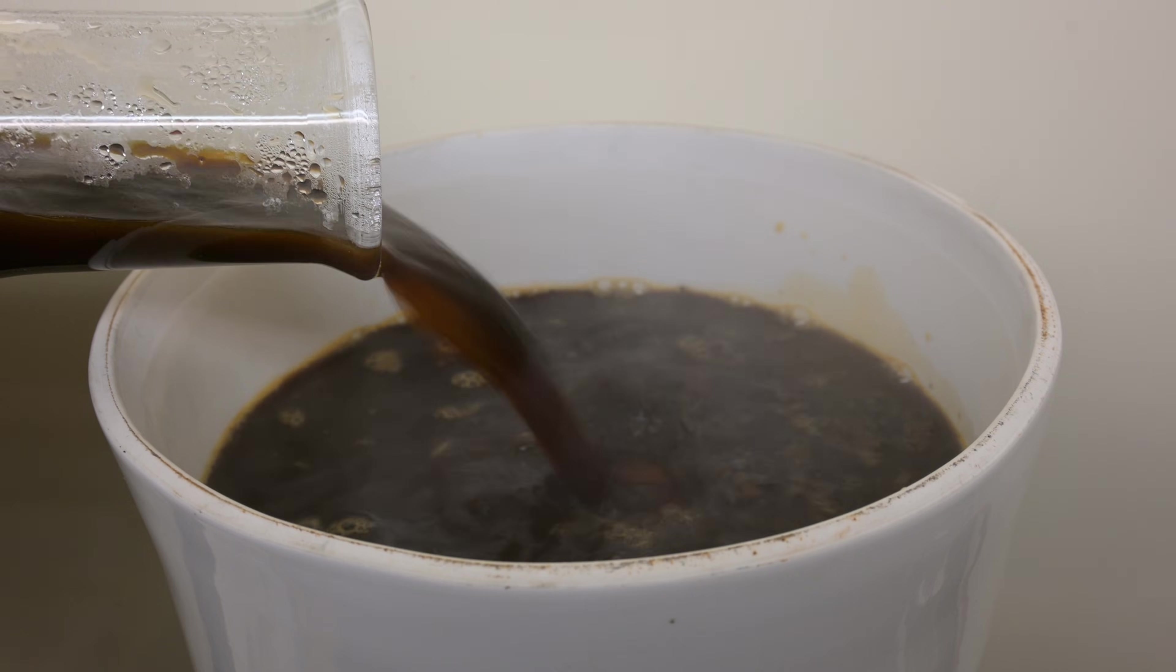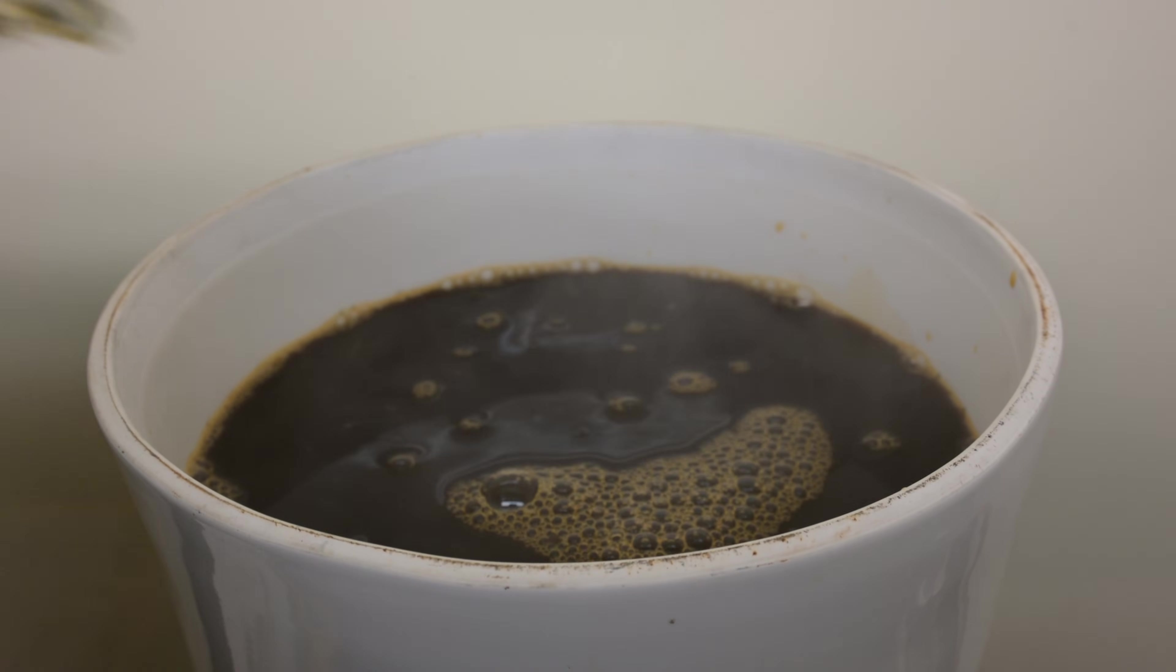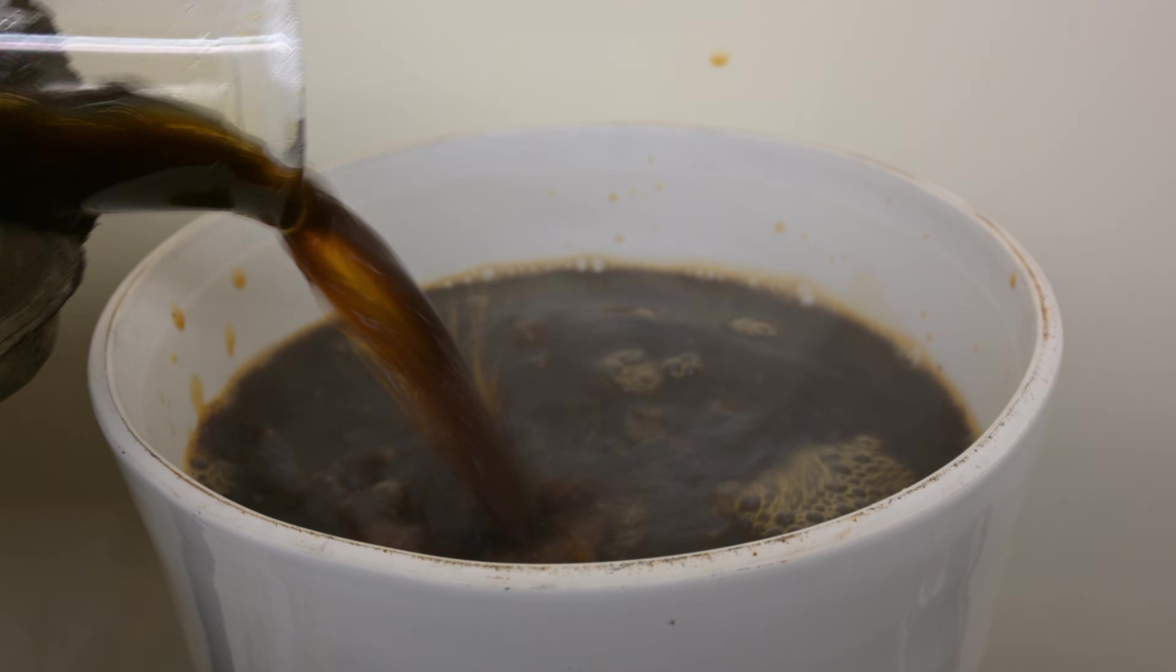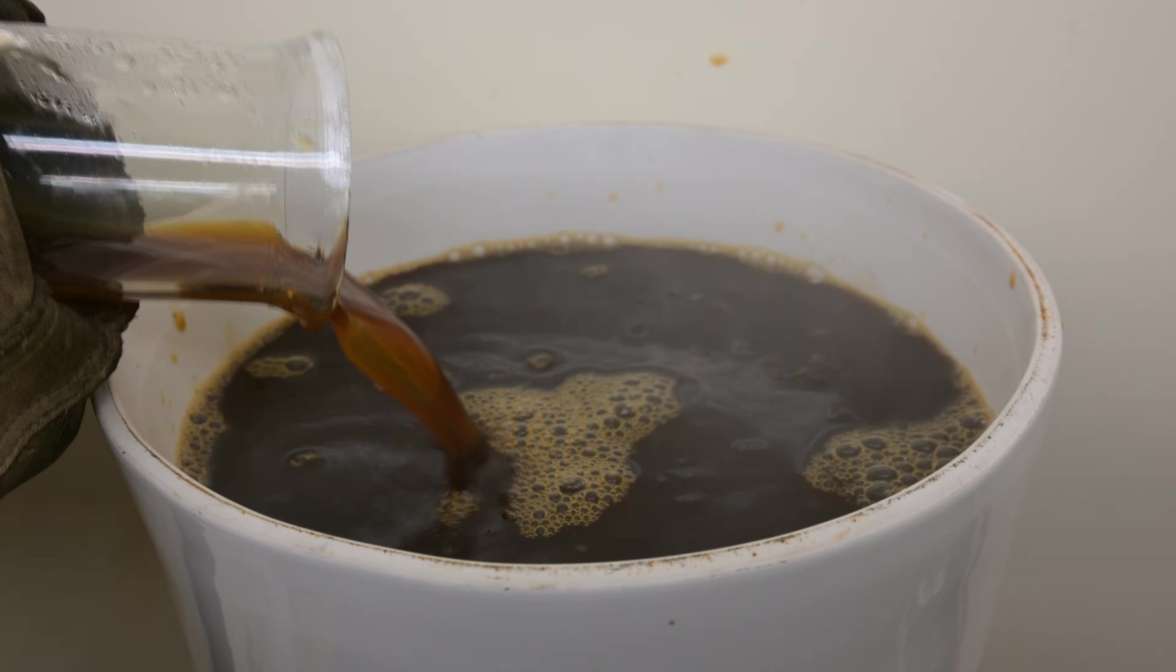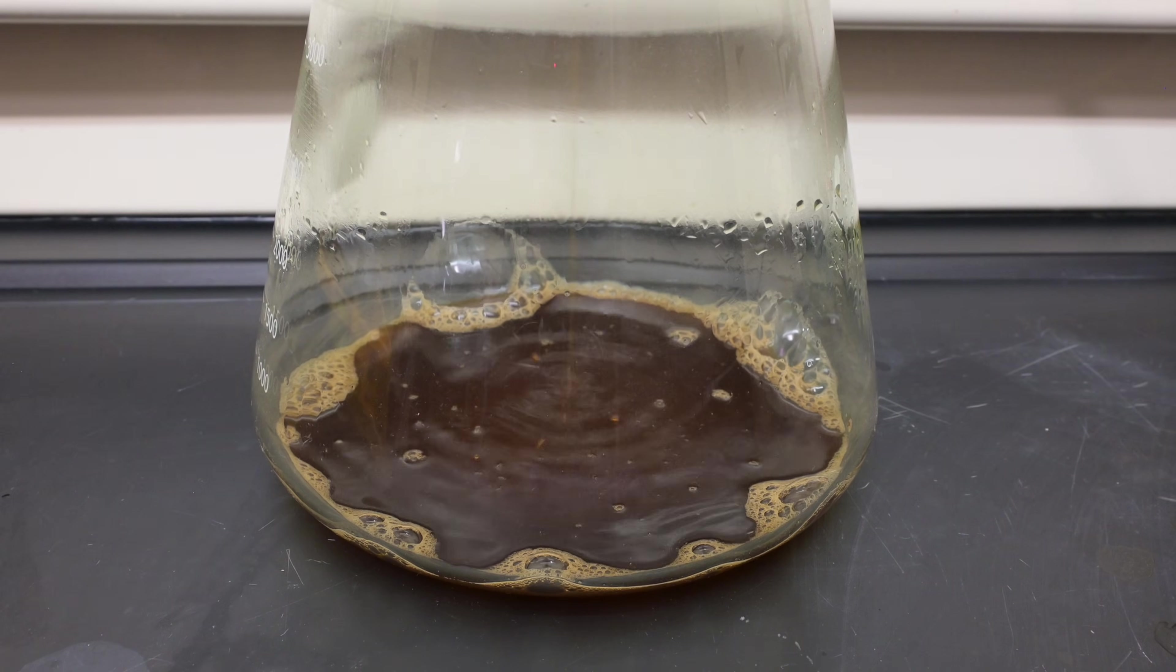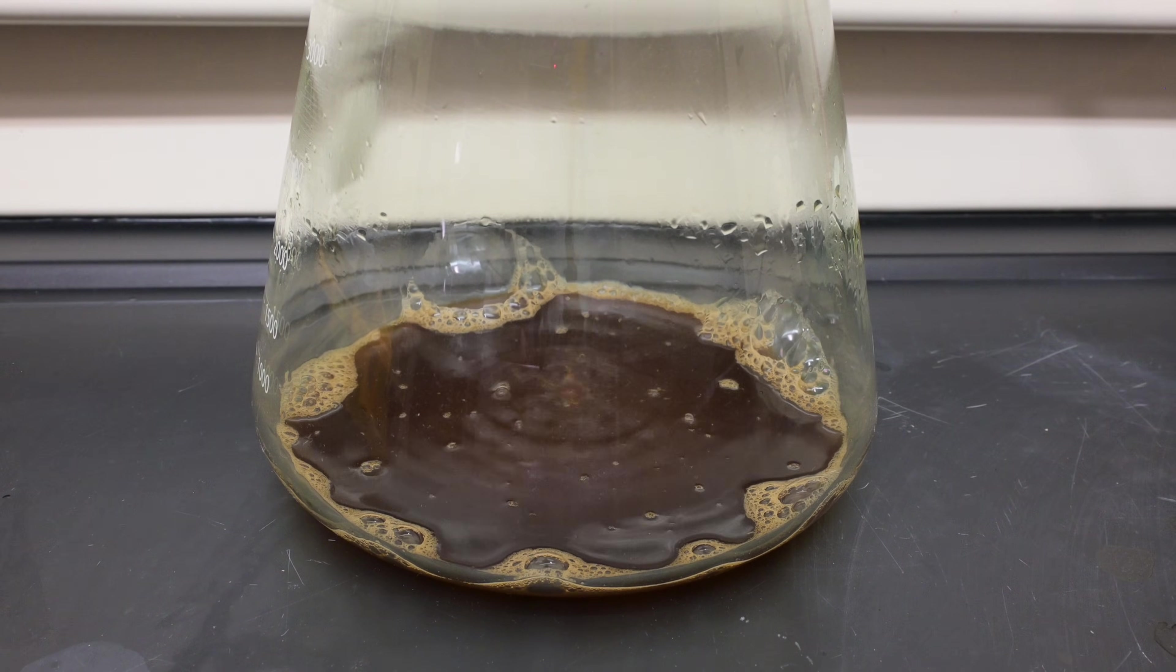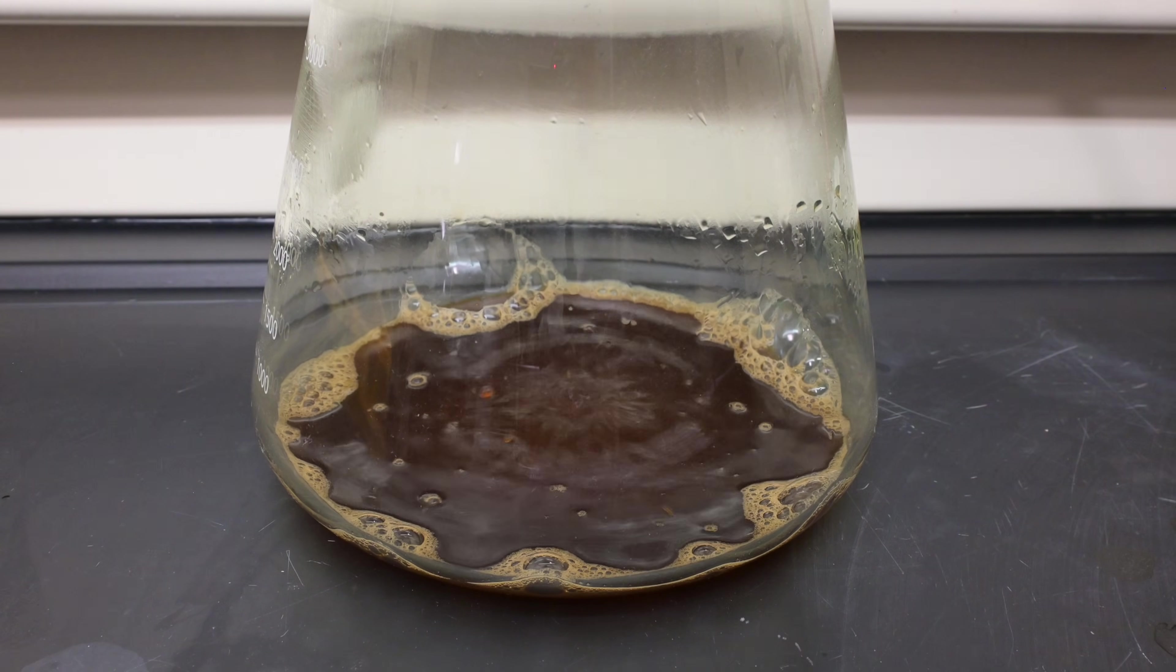I used a large Buchner funnel on a vacuum flask. To speed up filtering, I applied a vacuum. This process was still prolonged and took a few hours to complete. I also washed the leaves a few times to ensure as much caffeine was transferred as possible. The aqueous solution coming through the funnel is a dark brown color, thanks to tannic acid. Hopefully it contains our caffeine as well.